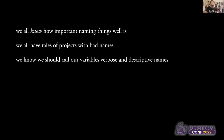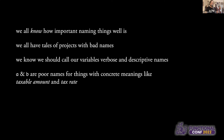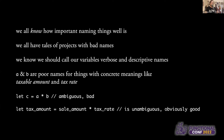We know that we should call our variables verbose and descriptive names. For instance, A and B are really poor names for concrete things like taxable amount and tax rate. 'Let this equals A times B' is ambiguous in meaning compared to 'let the tax amount be the sale amount times the tax rate.' This is fairly unambiguous and obviously better.